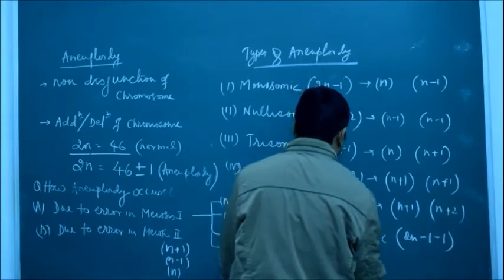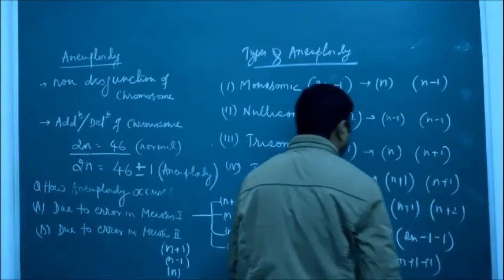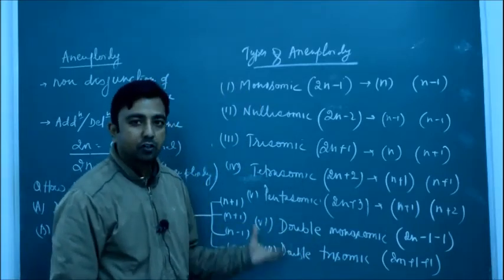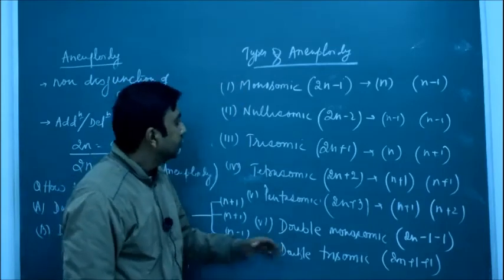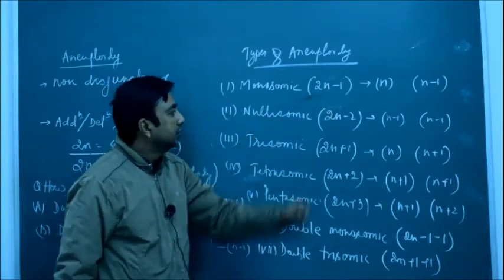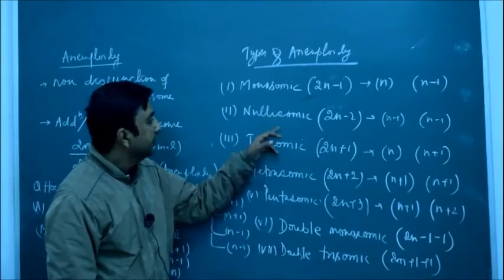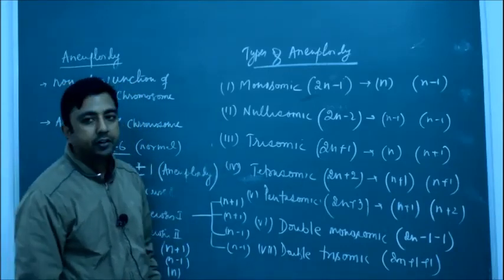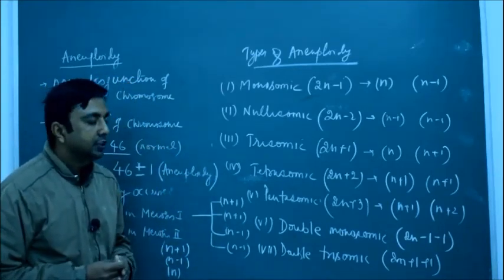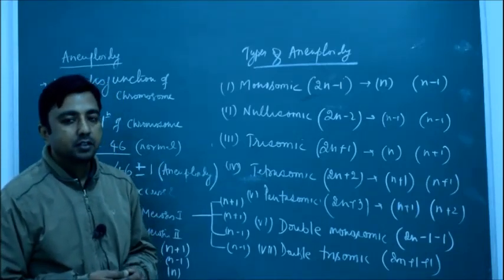The seventh is double trisomic, represented as 2n plus 1 plus 1. You have to determine what would be the nature of the gametes for these conditions. Questions are asked like: what would be the chromosome number in monosomic, nullisomic, trisomic, and so on. This is the concept of aneuploidy, and if you have understood it, you can easily answer any questions with confidence. Thanks for watching.